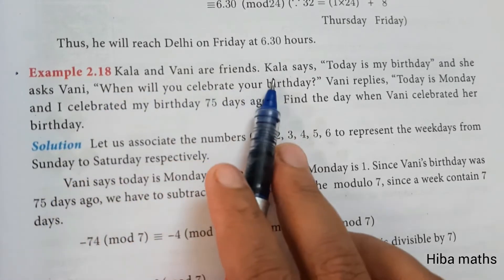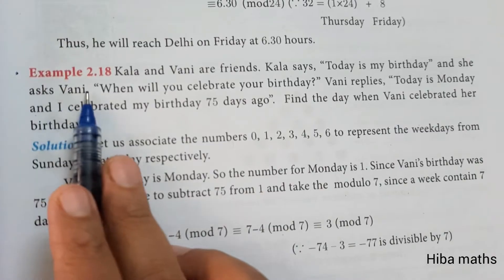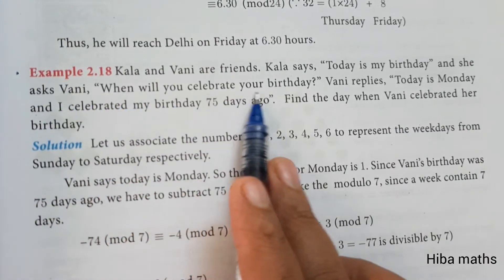Kala and Vani are friends. Kala says, 'Today is my birthday' and asks Vani, 'When will you celebrate your birthday?'